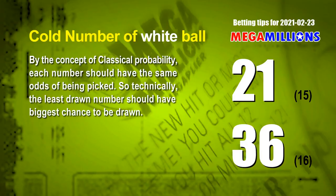In the end of this video, we have two more tips for you: cold numbers and overdue numbers. By the concept of classical probability, each number should have the same odds of being picked, so technically the least drawn number should have the biggest chance to be drawn. After counting hundreds of results, the two coldest white balls are 21 and 36. White ball 21 has been drawn only 15 times in the last 346 draws; white ball 36 has been drawn only 16 times in the last 346 draws.